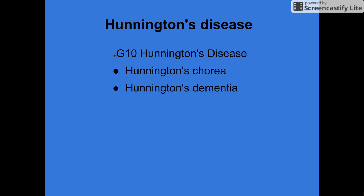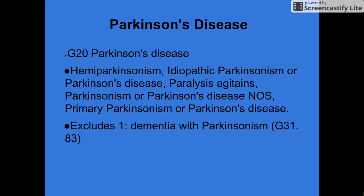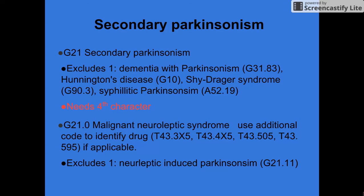For Huntington's disease, the code is G10, and it includes Huntington's chorea and Huntington's dementia. G20 is Parkinson's disease, which excludes dementia with Parkinsonism. Secondary Parkinson's disease is G21. It excludes dementia with Parkinsonism, Huntington's disease, Shy-Drager syndrome, and syphilitic Parkinsonism. It needs a fourth character.